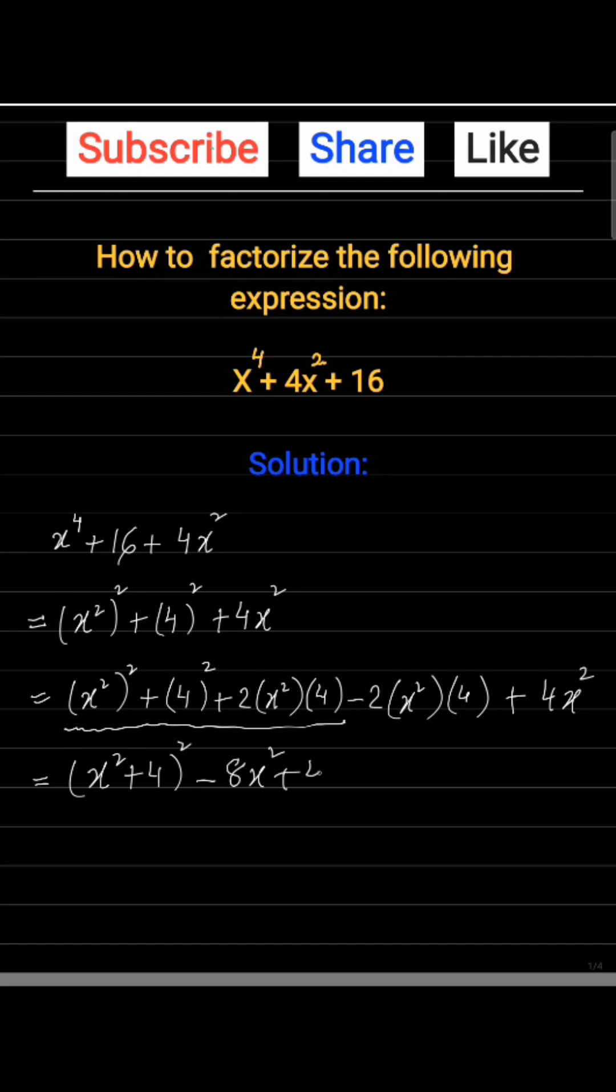And last term is 4x². We further solve it as (x² + 4)² - 4x². Since 4x² is a square, we can write (x² + 4)² - (2x)².